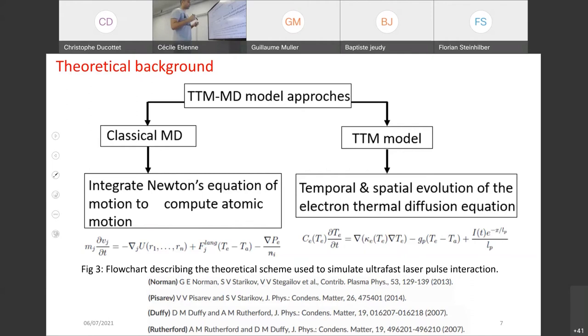The electrons or free electron gas is modeled with what we call electron thermal diffusion equation. This is the source term. I deals with the fluence or absorbent intensity. Lp is the optical penetration depth of your laser. Gp is electron thermal interaction. Kappa E is electrical thermal conductivity. And C is the electronic specific heat. If you want more details about this, I advise you to read these four nice articles.